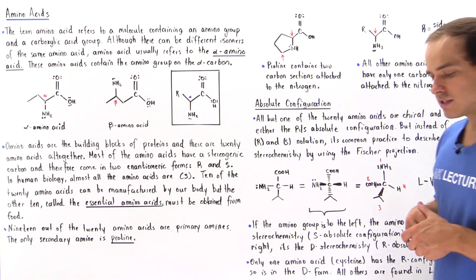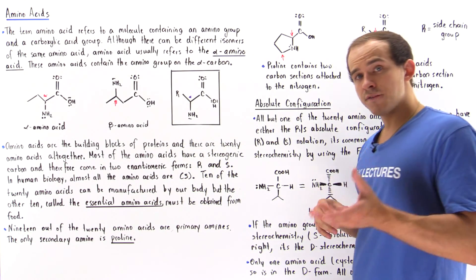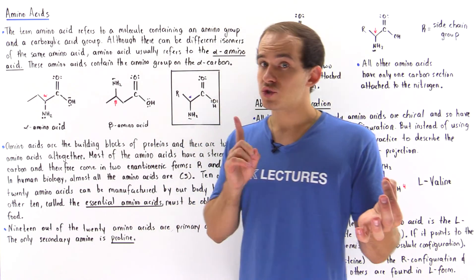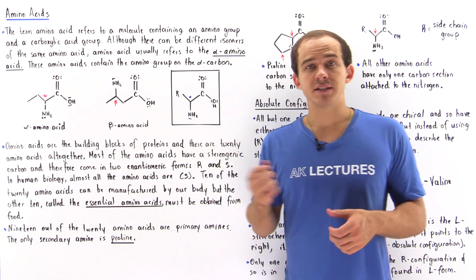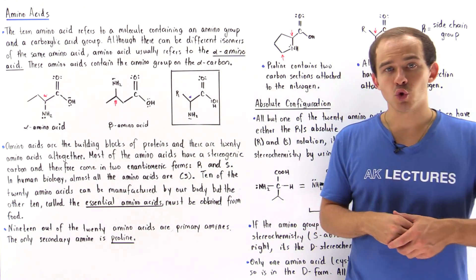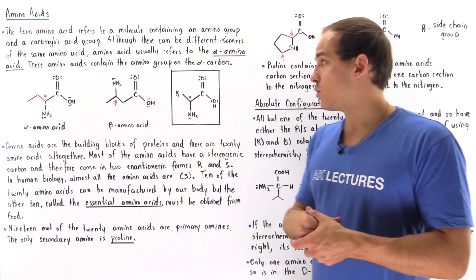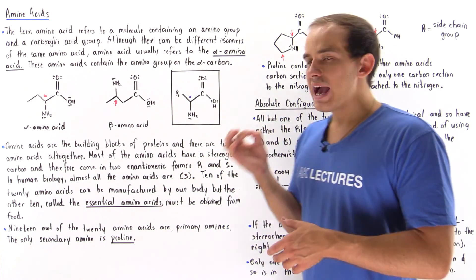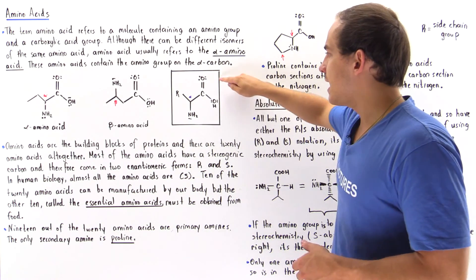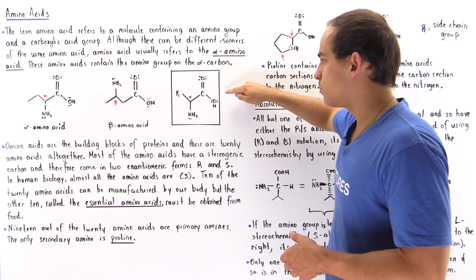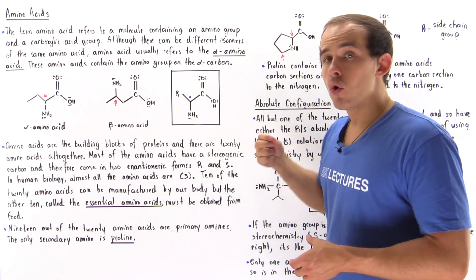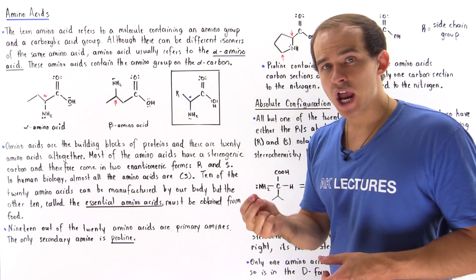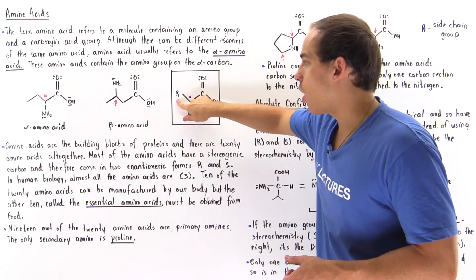The term amino acid basically refers to a molecule that contains an amino group as well as a carboxylic acid group, and the general form of the amino acid looks something like this. Every amino acid contains the carboxylic acid group and the amino group, and it also contains some type of side chain designated by R.